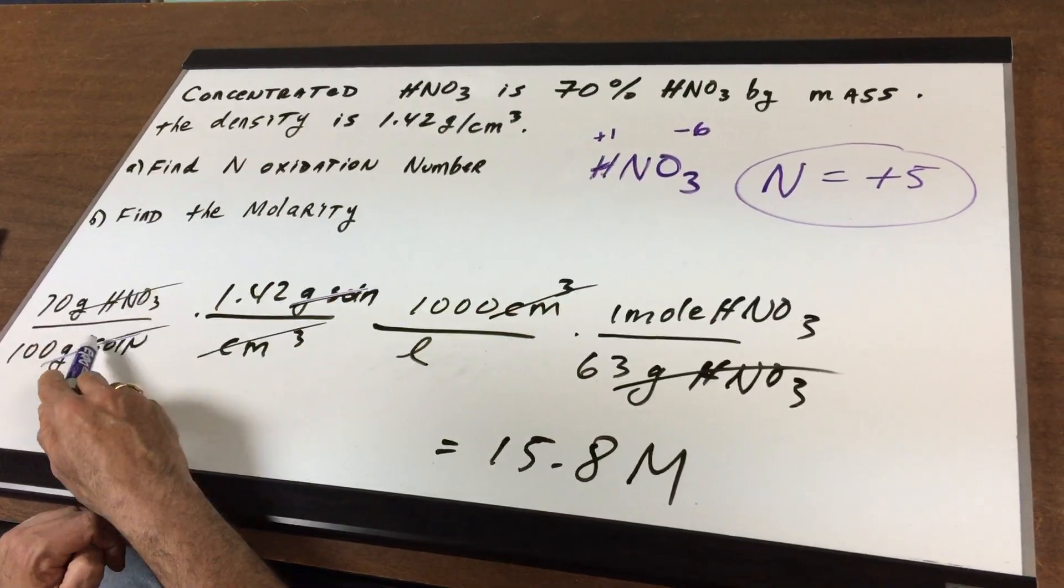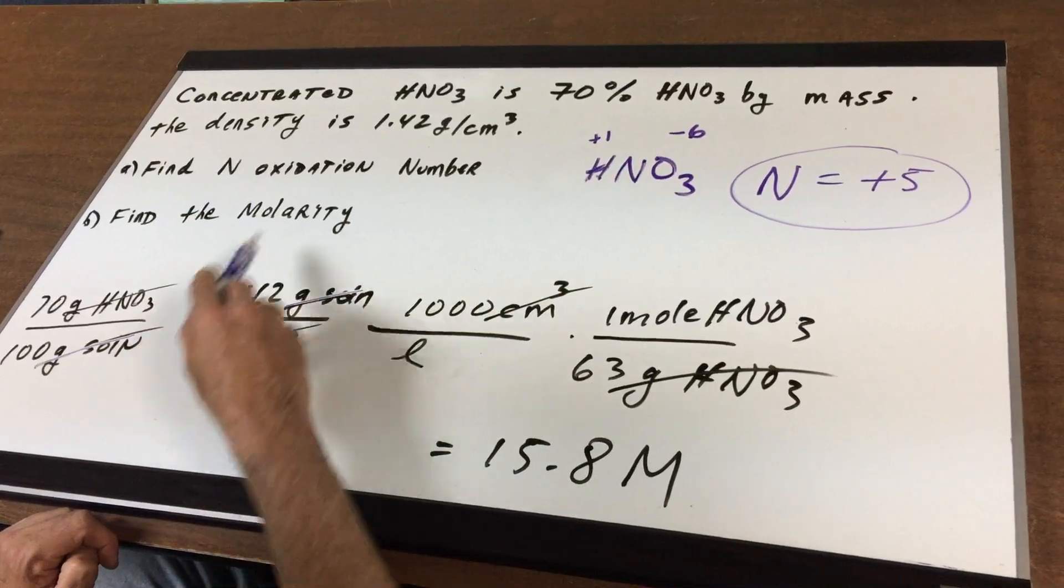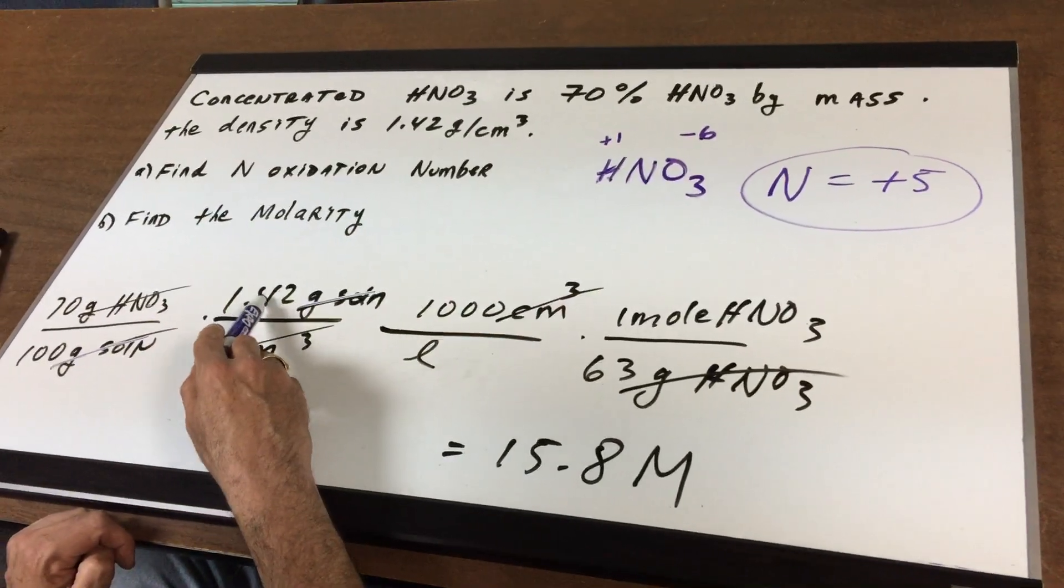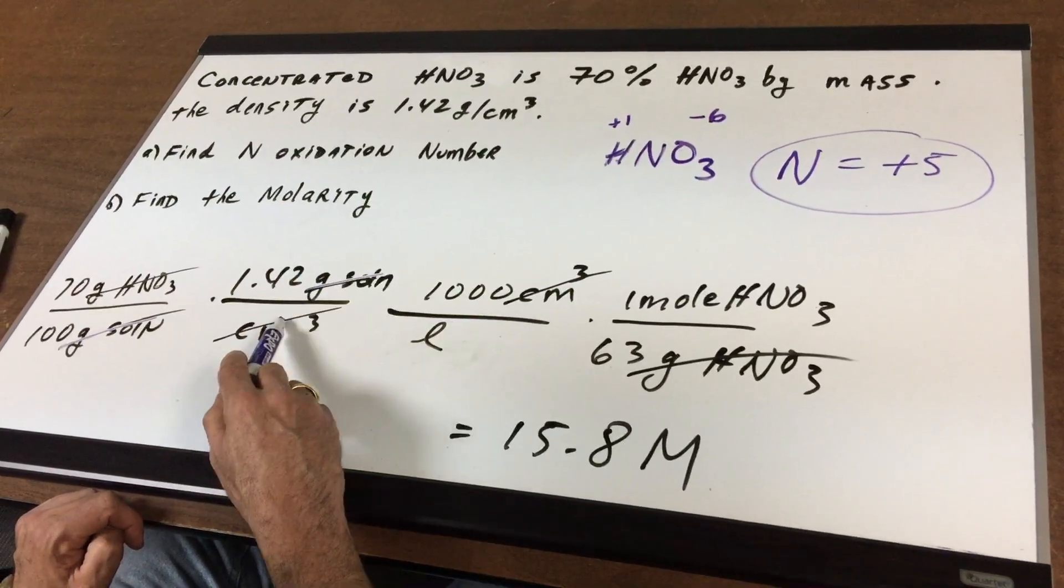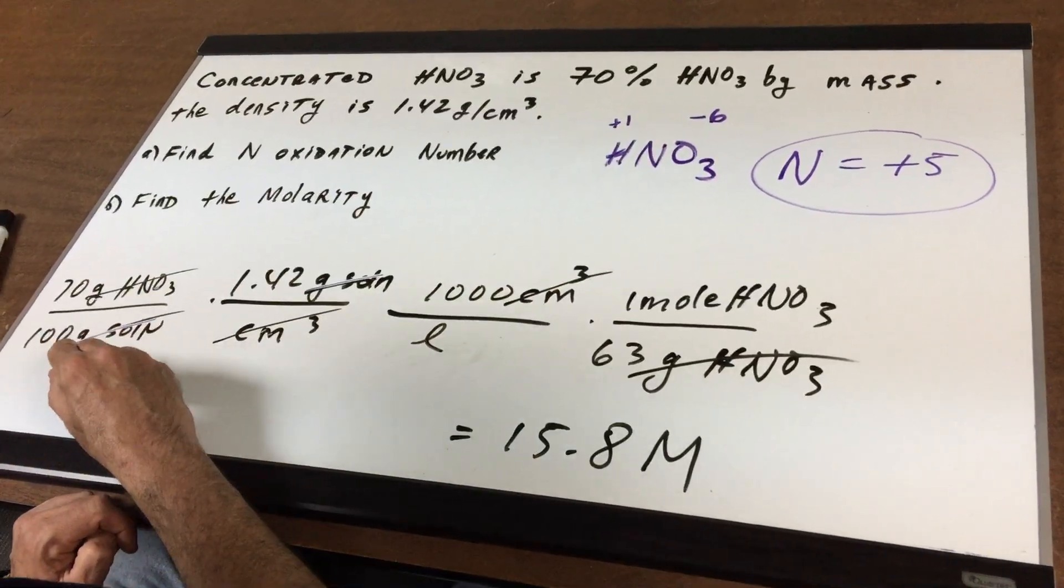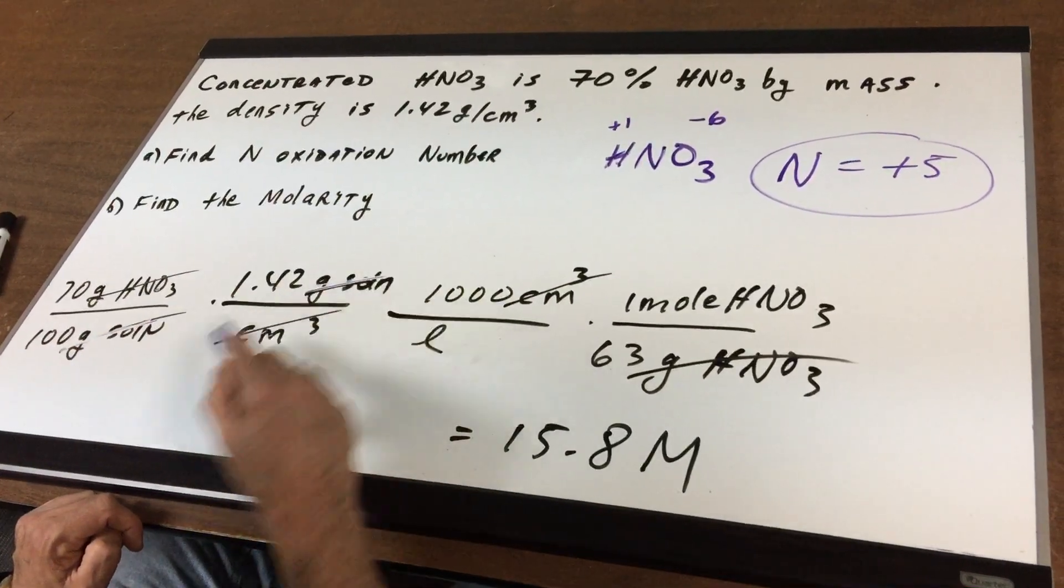We need molarity in moles per liter. I'm going to take the density, 1.42 grams of solution per cubic centimeter. That crosses out grams of solution.